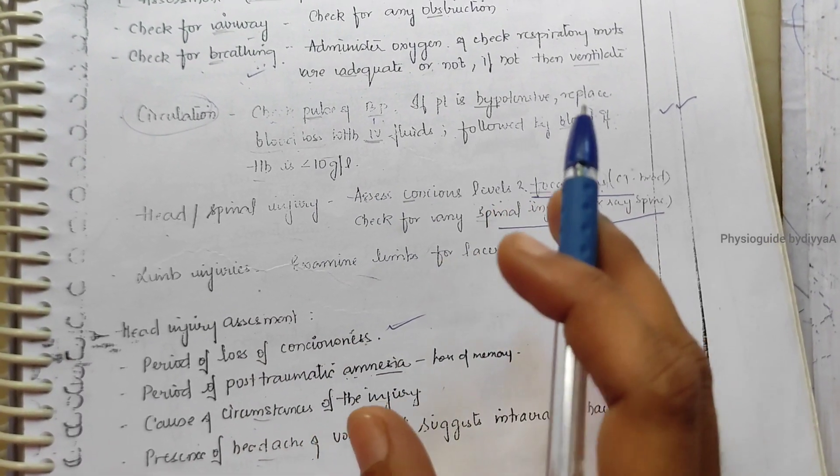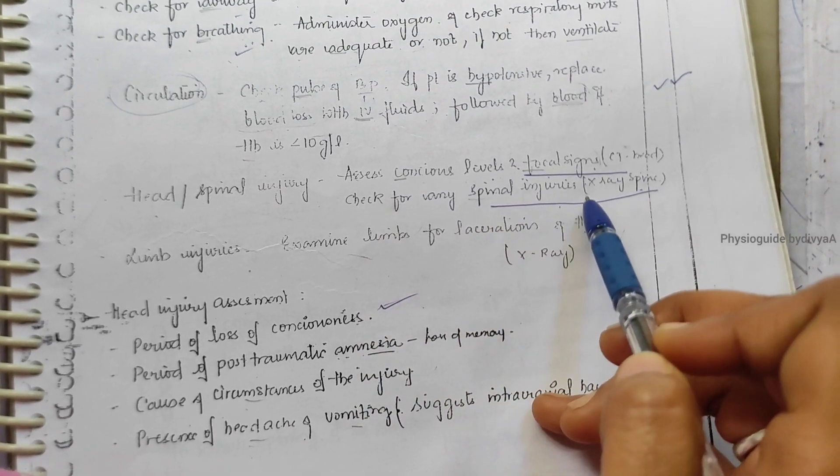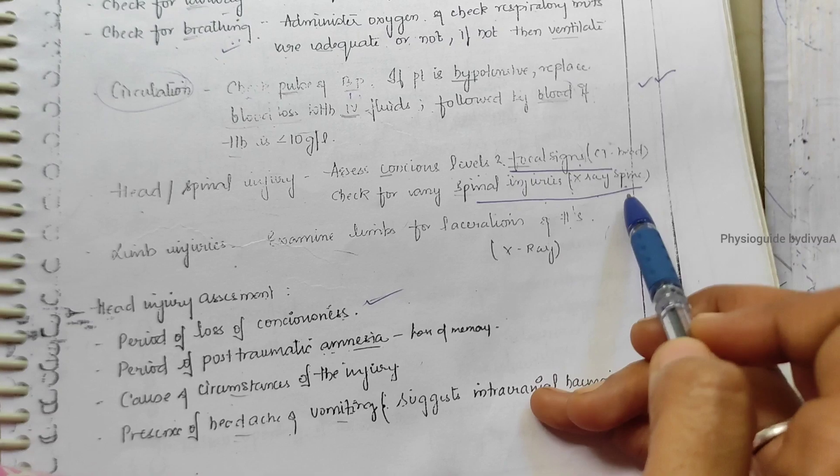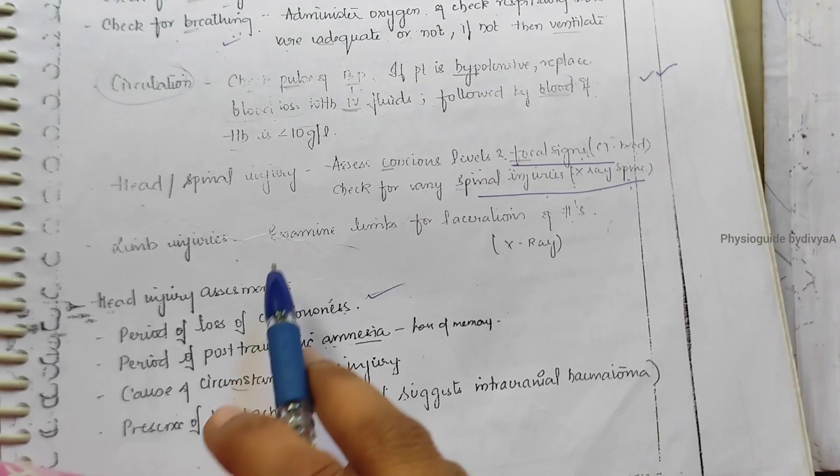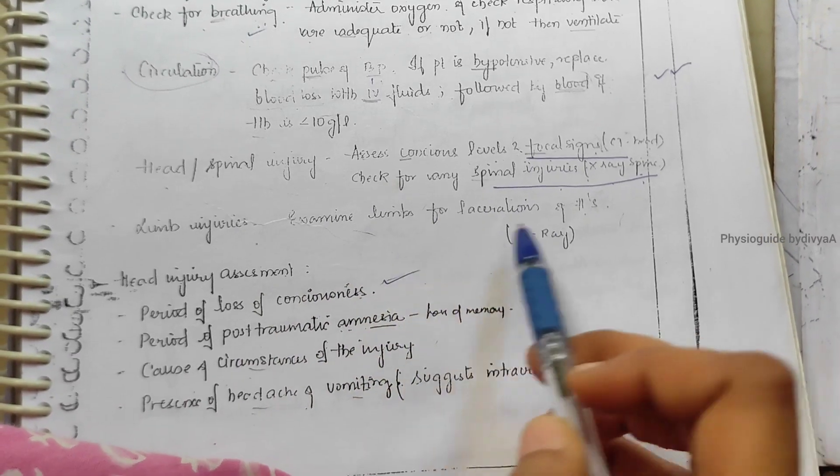Head and spinal injuries should be protected with splints. Take spinal x-rays if there are spinal injuries, CT scan for focal brain injuries, and x-ray for limb injuries. Examination includes GCS scale.